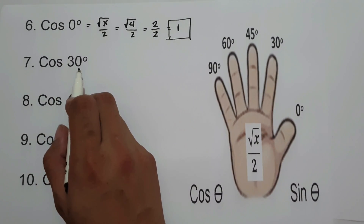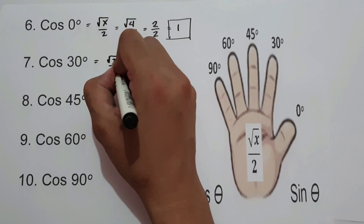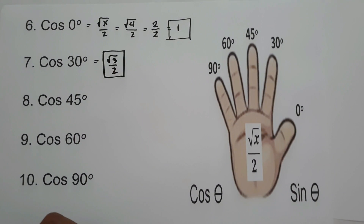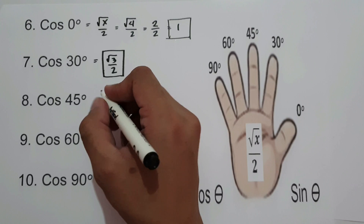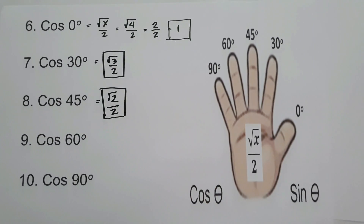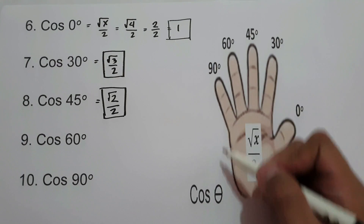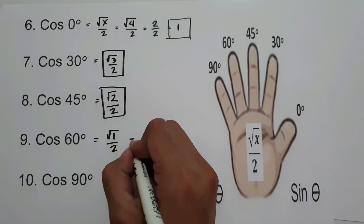For cosine 30°, counting gives 1, 2, 3. Cosine 30° is square root of 3 over 2. For cosine 45°, counting gives 1, 2. Cosine 45° is square root of 2 over 2. For cosine 60°, counting the fingers between 60° and cosine gives square root of 1 over 2, which is 1/2.